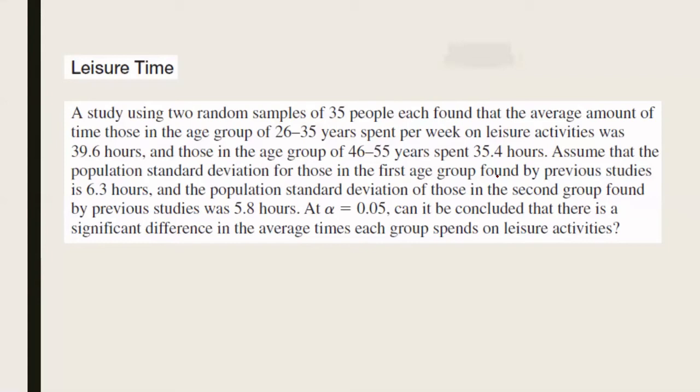So let's try this example before we end. A study using two random samples of 35 people each found that the average amount of time those in the age group of 26-35 years spent per week on leisure activity was 39.6 hours and those in the age group of 46-55 years spent 35.4 hours. Assume that the population standard deviation for those in the first group found by previous studies is 6.3 hours and the population standard deviation of those in the second group was 5.8 hours. At alpha equals 0.05, can it be concluded that there is significant difference?